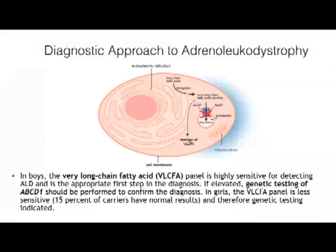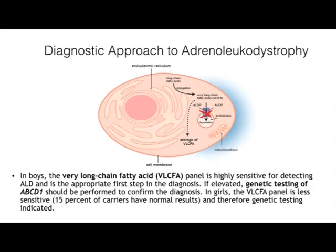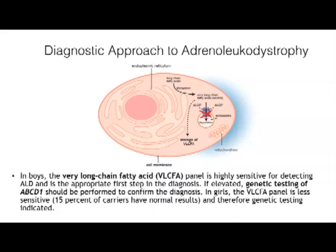Adrenal leukodystrophy is caused by mutations in ABCD1, a gene that encodes a peroxisomal half transporter also known as ALD protein. This protein is necessary to transport very long chain fatty acids into the peroxisome for degradation. Hence, very long chain fatty acids are highly sensitive tests to detect adrenal leukodystrophy. If elevated, this should be followed by genetic testing of ABCD1. In girls, the very long chain fatty acids are less reliable and you need to perform mutation testing.